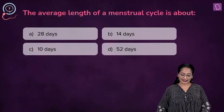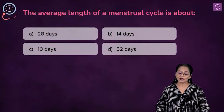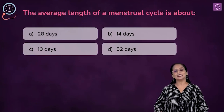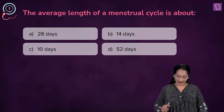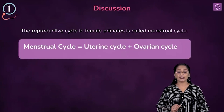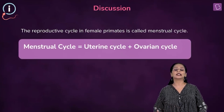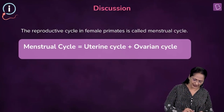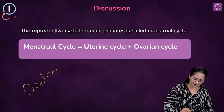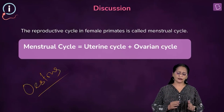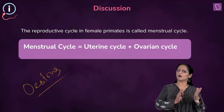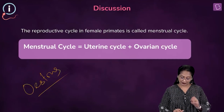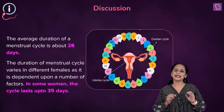A new question for you. The average length of a menstrual cycle is about 28 days, 14 days, 10 days, or 52 days? The reproductive cycle found in the females of primates is called the menstrual cycle. The menstrual cycle is the combination of a uterine cycle and the ovarian cycle, and the average duration of the menstrual cycle is about 28 days.